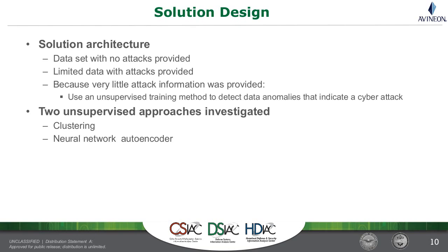Typically you'd like a lot more data and a lot more different types of attacks and how they would affect the system. Because we had very little attack information, we elected not to use a supervised learning technique — we felt an unsupervised approach was going to be better. If we had a data set with a lot of attack information, we could have trained it to recognize very specifically those attacks. But because we had so few attacks, we felt that wouldn't yield a good solution. Instead, we just wanted to characterize the normal system behavior and then detect anomalies in how that system was behaving. We investigated two unsupervised approaches: clustering and a neural network autoencoder.